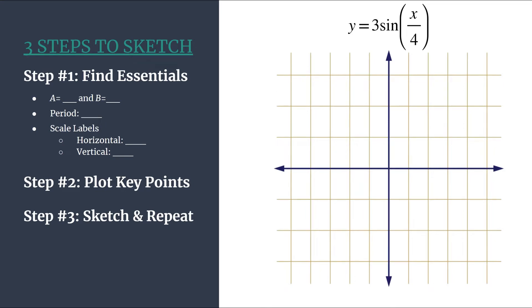Before we get started, let's do a quick rewrite of our equation so we can clearly see what we know — we're going to want to find a and b. These equations are in the form y equals a sine bx. The b is 1/4, so let's rewrite this as 3 sine of 1/4 x, since 1/4 times x is the same as x over 4.